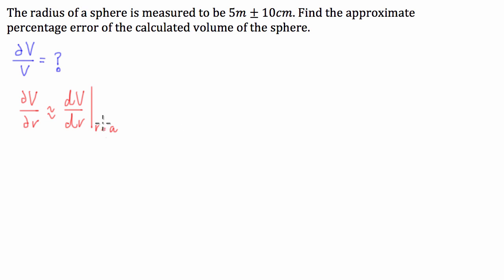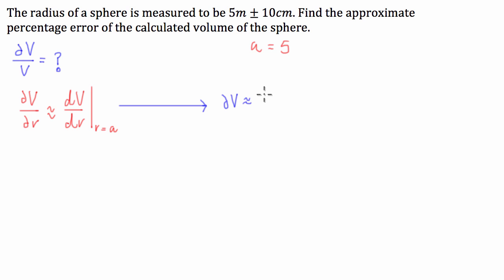We'll call it r equals a, and here we've got the radius equalling 5 metres, so a is equal to 5. We can find the incremental change in volume by rearranging this formula: ΔV can be approximated by dV/dr evaluated at r equals a, times the incremental change in radius dr, which equals 10 centimetres.